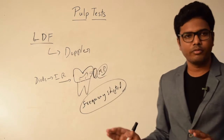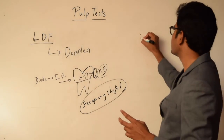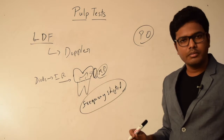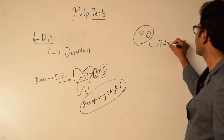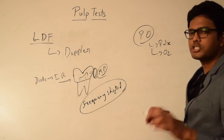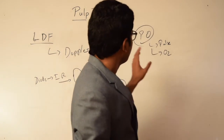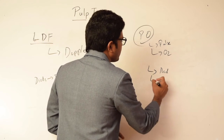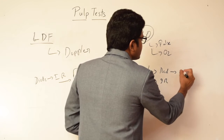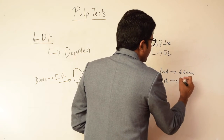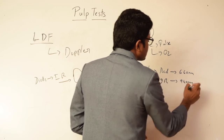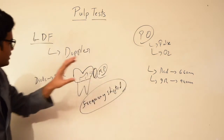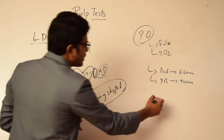Now moving on to pulse oximetry. Pulse oximetry is commonly used in a medical scenario for measuring the pulse rate as well as the oxygen concentration of a vascular tissue. Pulse oximetry uses two lights: a red light with a wavelength of 660 nanometers, and an infrared light with a wavelength of 940 nanometers. Similar to laser Doppler flowmetry, pulse oximetry emits these two lights which are incident onto a tooth.